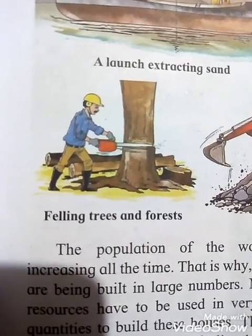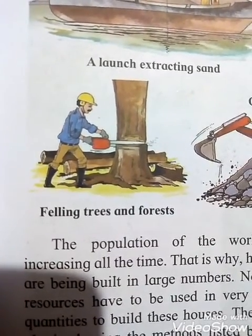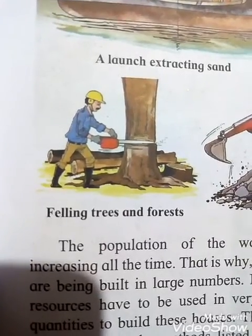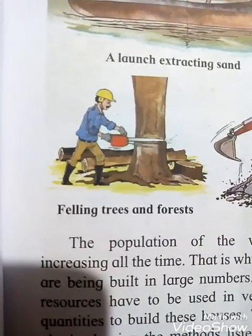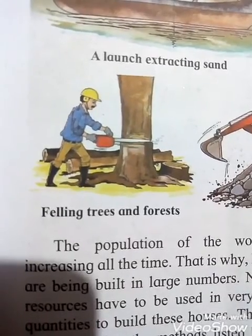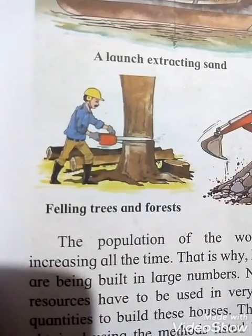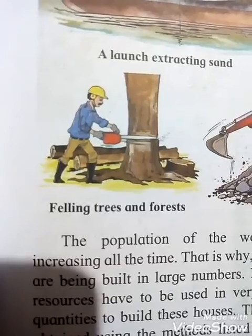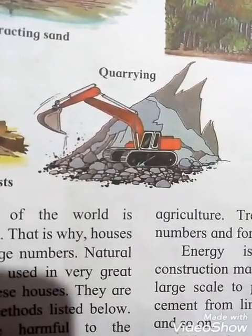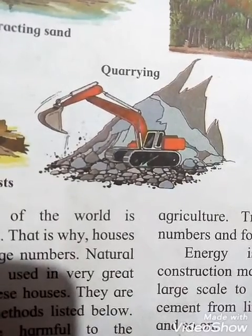When trees are cut, we lose our source of fresh air. Because of felling trees and forests, deforestation problems arise. Afterwards, quarrying — extracting stone and sand from a quarry — causes noise pollution and air pollution.